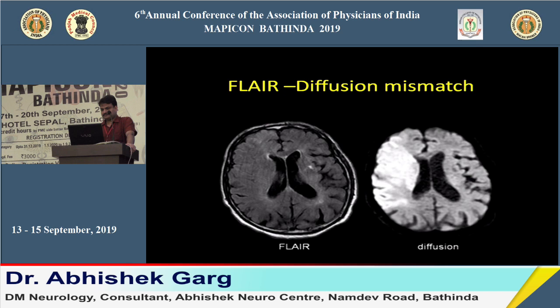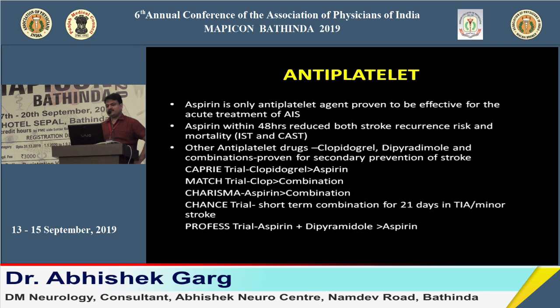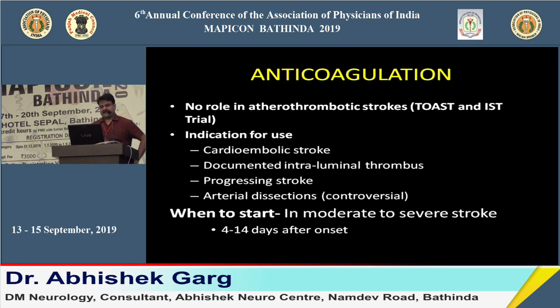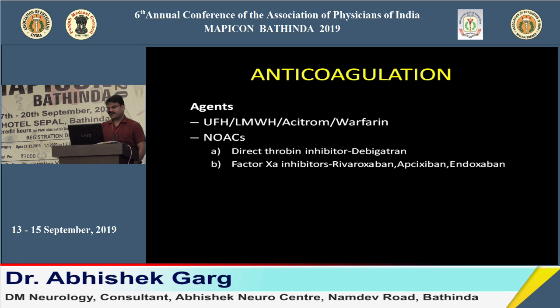Aspirin is the only antiplatelet agent proven effective for acute treatment of ischemic stroke. Other antiplatelets are used for secondary prevention but do not significantly help in the acute setting. Anticoagulation has no role in non-cardioembolic strokes; it should be used in cardioembolic strokes, when vascular imaging shows intraluminal thrombus, or in arterial dissection — started between 4 days and 14 days.